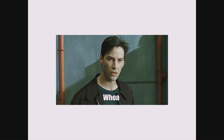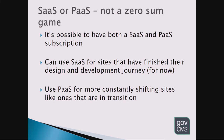It's not an either/or — agencies can have both SaaS and PaaS, and we do have agencies doing that. ATO has their annual report in a SaaS site, but they've also got complex sites in PaaS. Use SaaS for sites where you've finished development and it's running at BAU without major changes. Use PaaS for the constantly moving sites where you want to keep dropping modules in and pushing the boundaries.